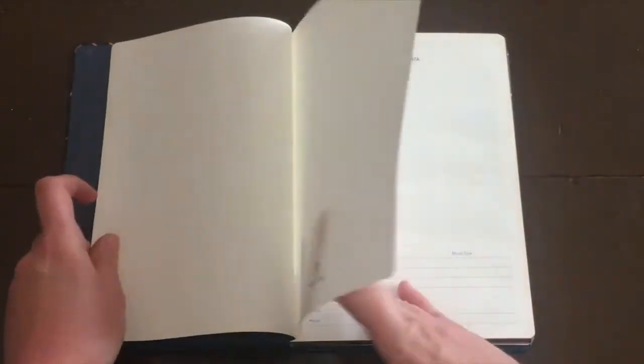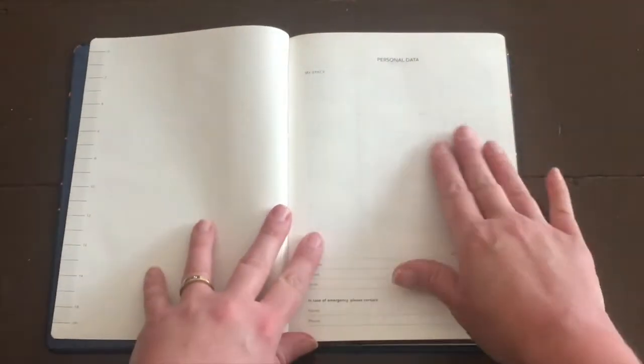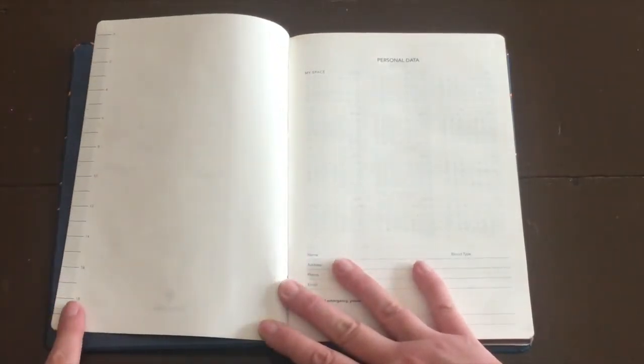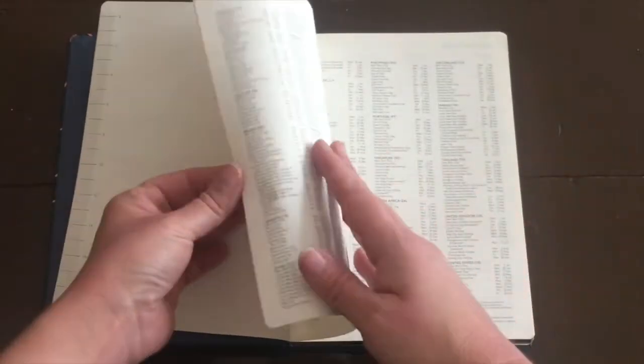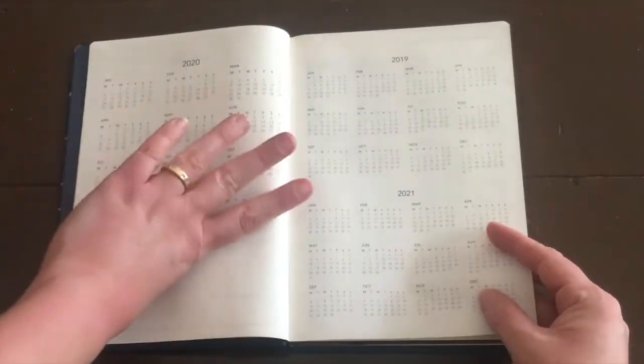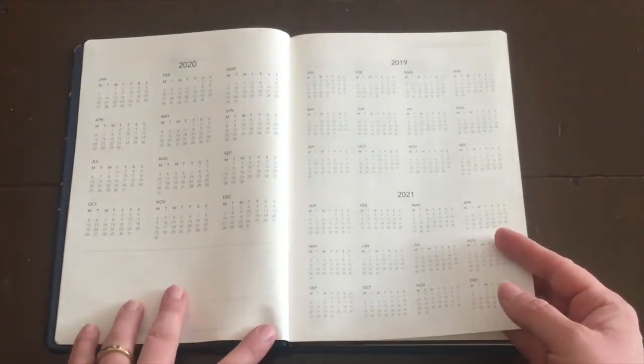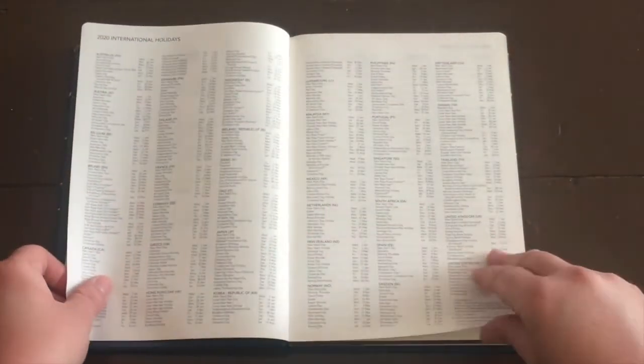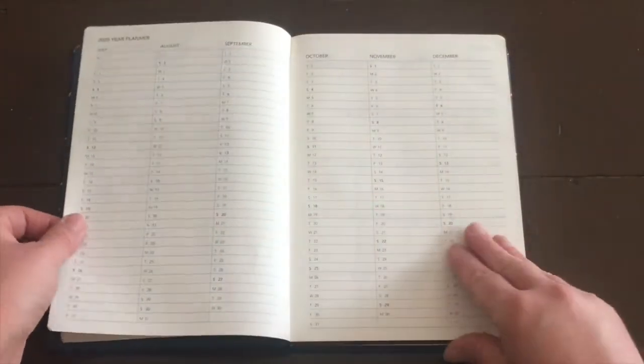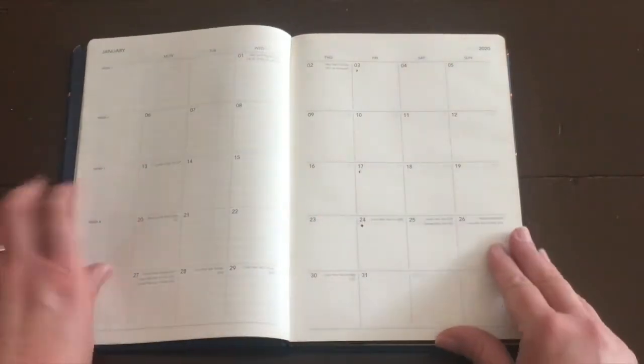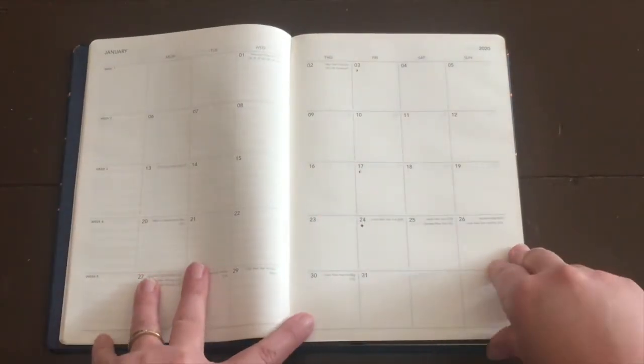And what you'll find now is the pages are very much the same as the smaller diary. It follows the same ruler on the left hand side, personal data. Then you go into the next page which has three calendars on it. So yearly calendars for 2020, 2019 and 2021.